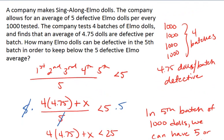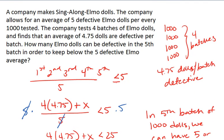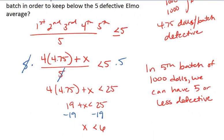And this depends whether you did less than or less than and equals to. If we do less than or equal to, we can actually have up to 6 defective.